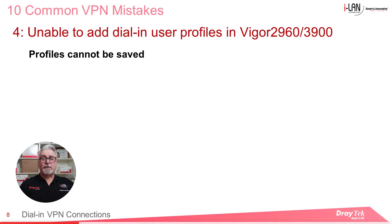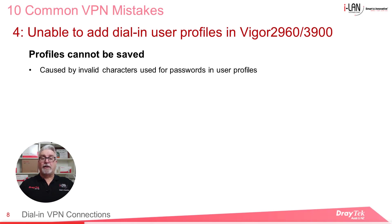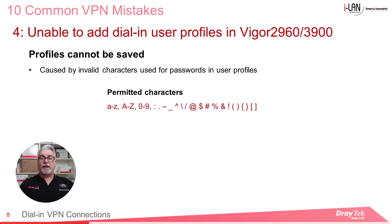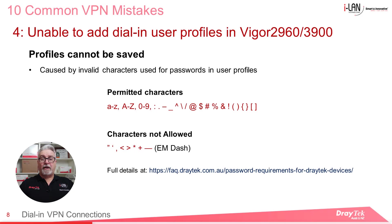The fourth mistake people sometimes make results in VPN user profiles not being saved for dial-in VPN users in the Vigor3900 or Vigor2960 routers. This is caused by invalid characters being used for the passwords in the user profiles. Draytek products use passwords for a variety of applications, and there is some variation to be aware of between applications and models. Full details of which characters are permitted in passwords is available in our application note, which I'll include in the description below.